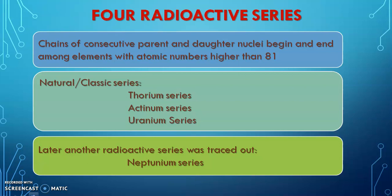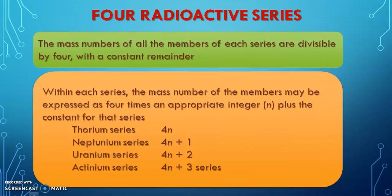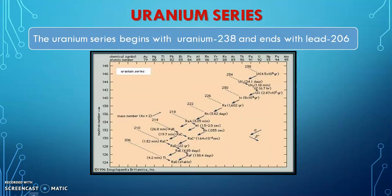Among the four series, the thorium, actinium, and uranium series are called natural or classic series, whereas the neptunium series is another radioactive series. The thorium series is called the 4n series, neptunium is 4n+1, uranium is 4n+2, and actinium is the 4n+3 series.